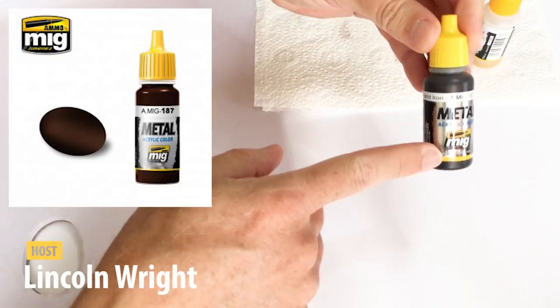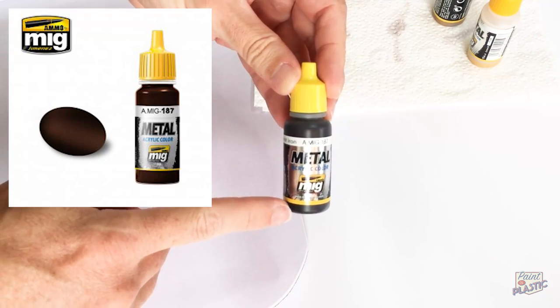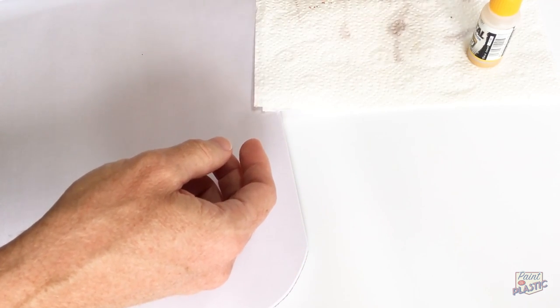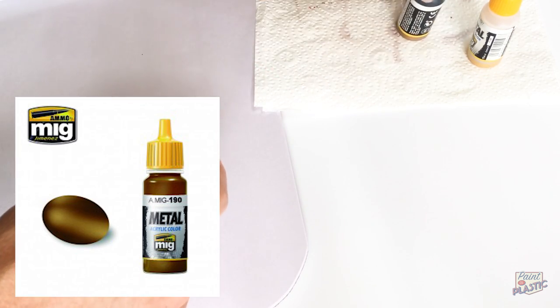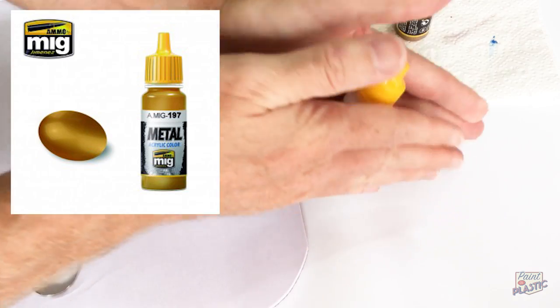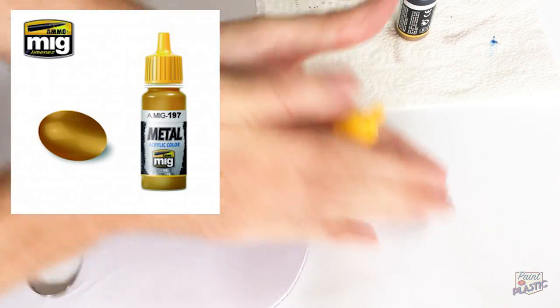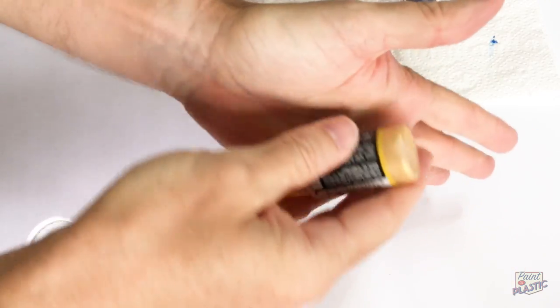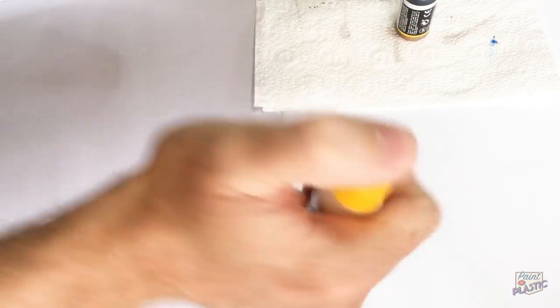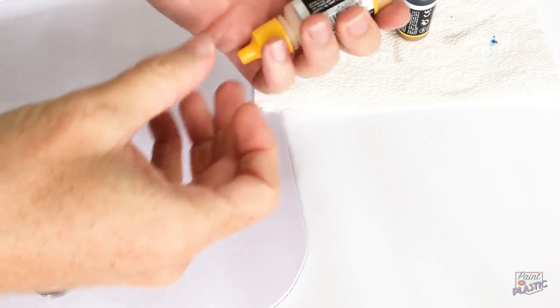Using a selection of products from Ammo by MIG Jimenez, here I have jet exhaust burnt iron, old brass to use as a base and then straight brass for the upper highlights. These bottles are brand new so I'm pointing out here that the pigments have separated. The top is a clear transport liquid and the metallic flakes and pigments have all settled to the bottom of the bottle so they really need a good vigorous shaking up and rolling to mix them up again.